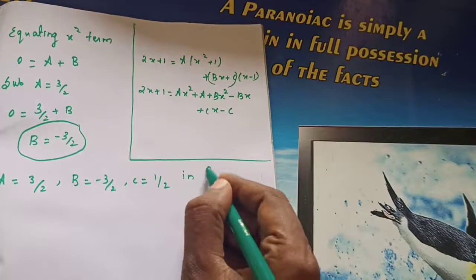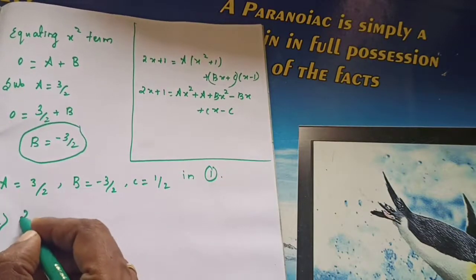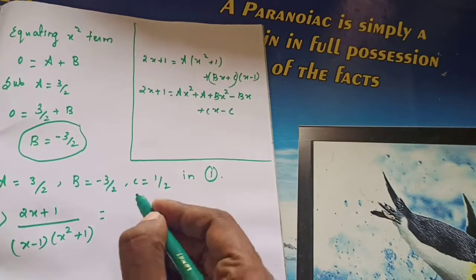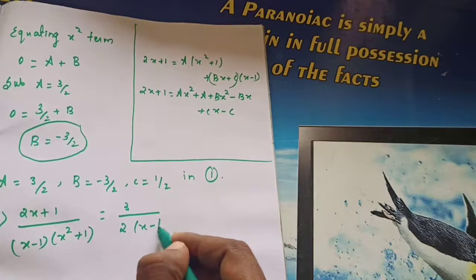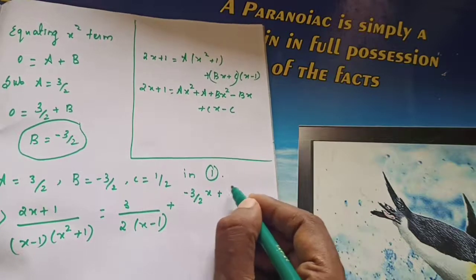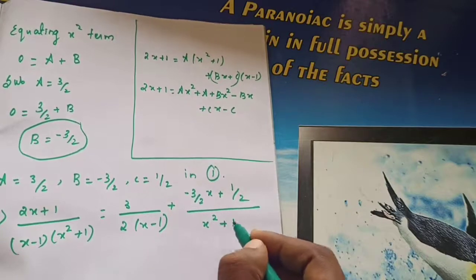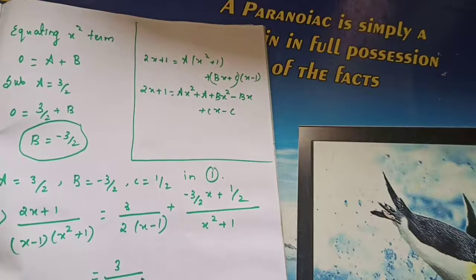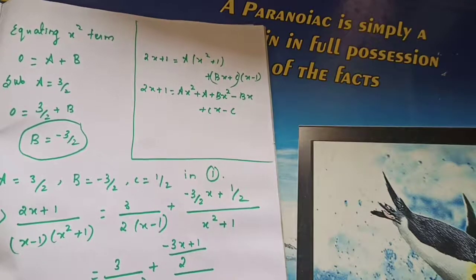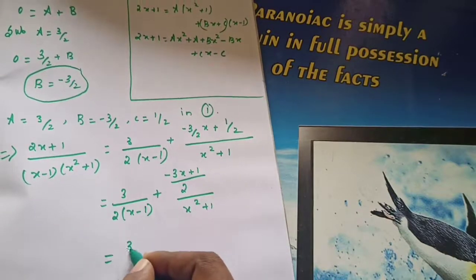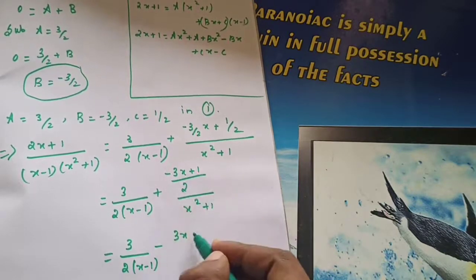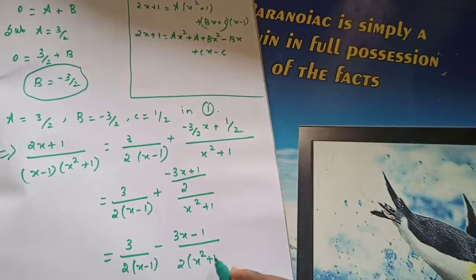So: A equals 3 by 2, b equals minus 3 by 2, c equals 1 by 2. Substituting in equation number 1: 2x plus 1 divided by x minus 1 into x squared plus 1 equals 3 by 2 divided by x minus 1, plus the numerator minus 3x plus 1 divided by 2 into x squared plus 1. Simplified: 3 by 2 into x minus 1, minus 3x plus 1 divided by 2 into x squared plus 1. This is the answer.